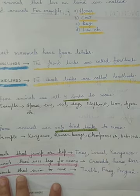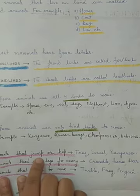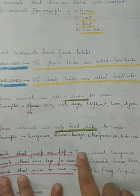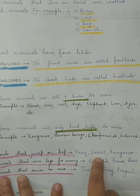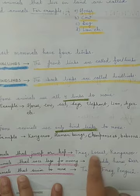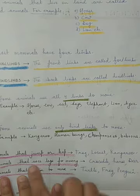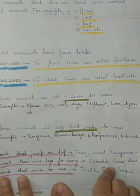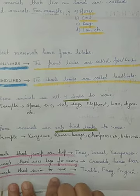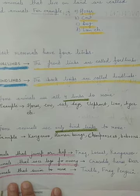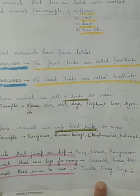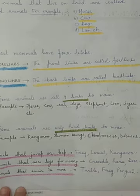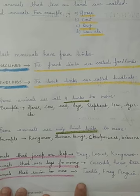There are different ways of movement and different organs for movement. Animals that jump include frog, locust, and kangaroo. Animals that use legs for moving include crocodile, horse, and deer. Animals that swim to move include turtle, frog, penguins, fish, and seahorse — they use their fins or tails to move. We will study this further in the water animals topic.